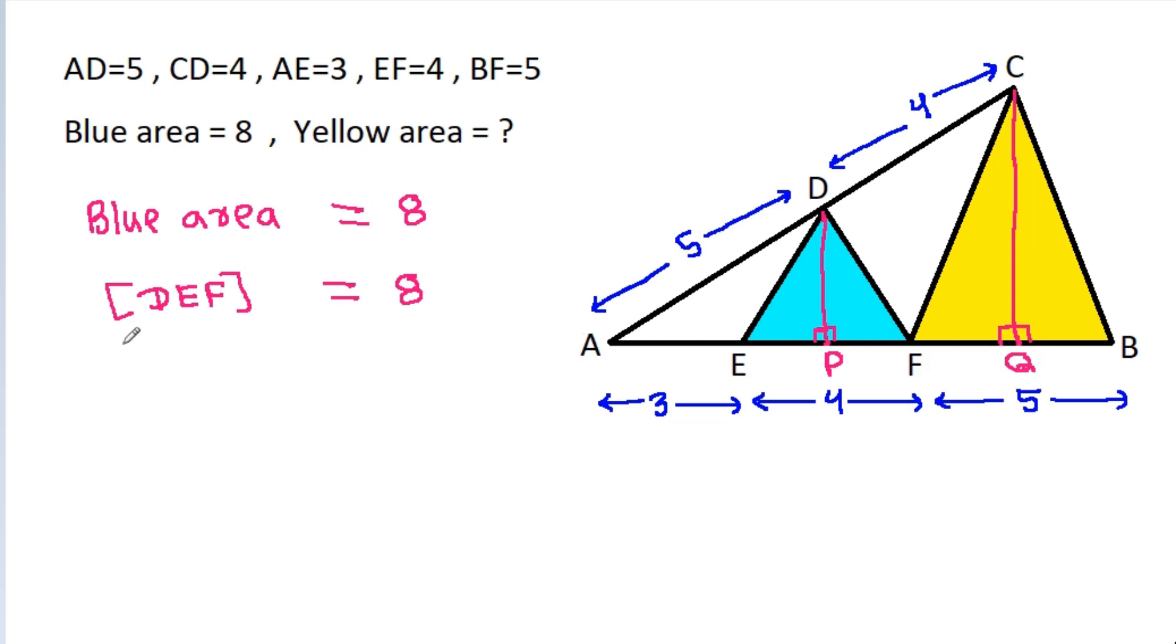Then area of DEF will be 1/2 times base EF times height DP. It is 8, and it is 1/2 times EF is 4 times DP.